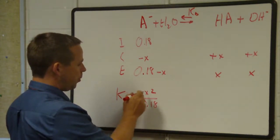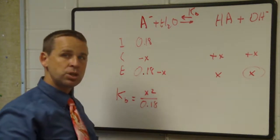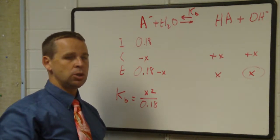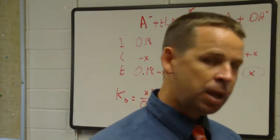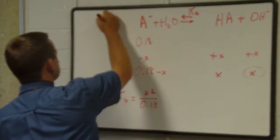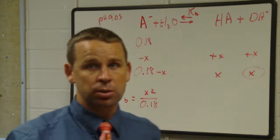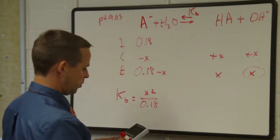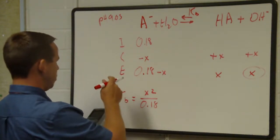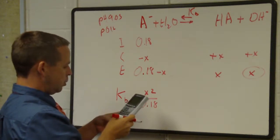In this scenario, if we had the Kb for this, that would be equal to X squared over 0.18. That's what the Kb would be equal to, and this X here is equal to the hydroxide ion concentration. We don't directly know the hydroxide ion concentration, we're told that the pH is 9.05.